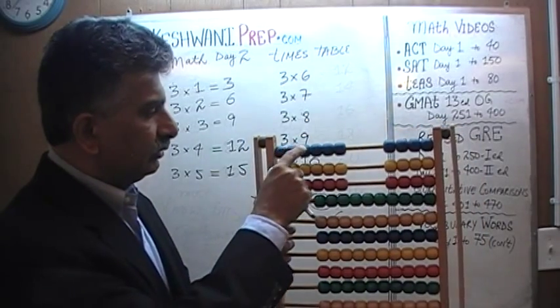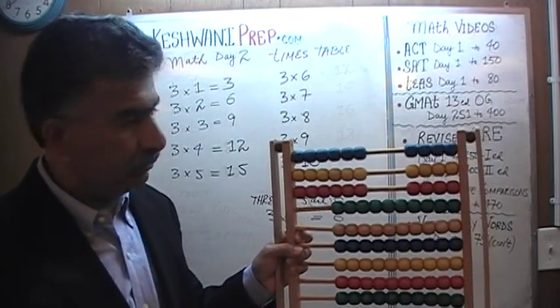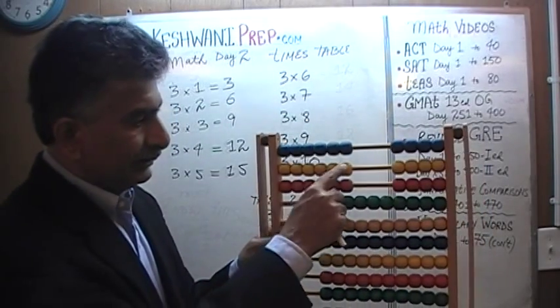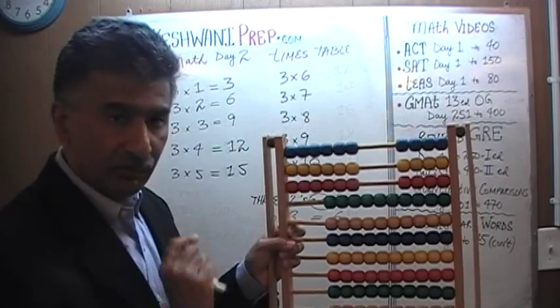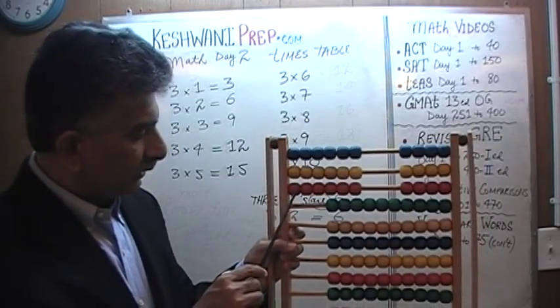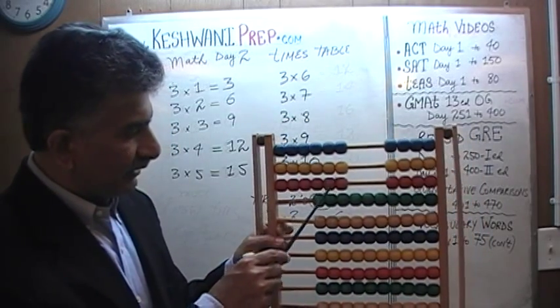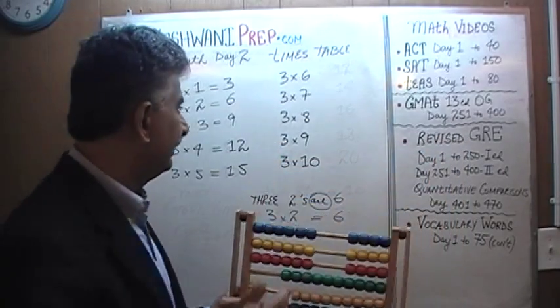Well, let's find out, shall we? 1, 2, 3, 4, 5, 6, which of course we knew, because there is 6 in each group. 7, 8, 9, 10, 11, 12. 13, 14, 15, 16, 17, and 18. 18. 3 6's are 18.